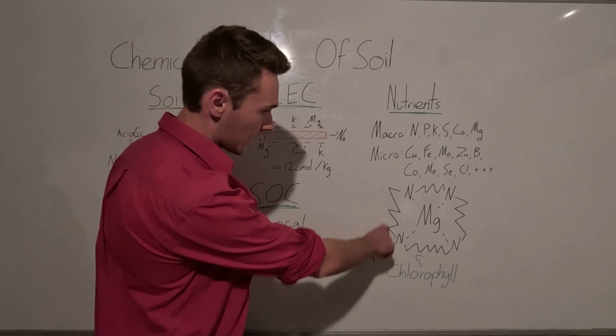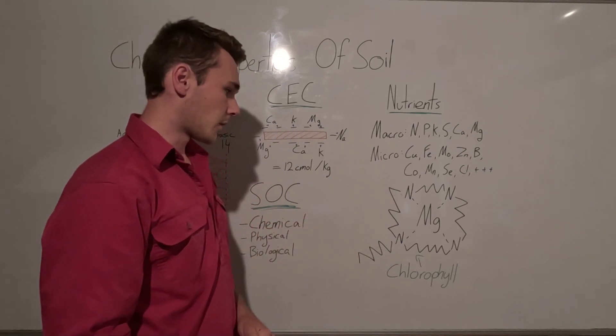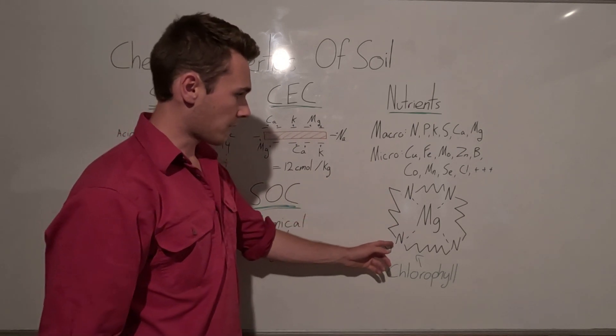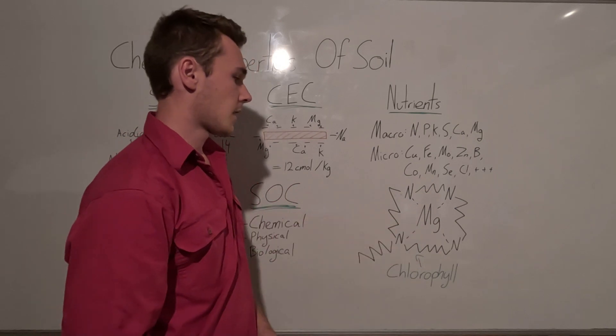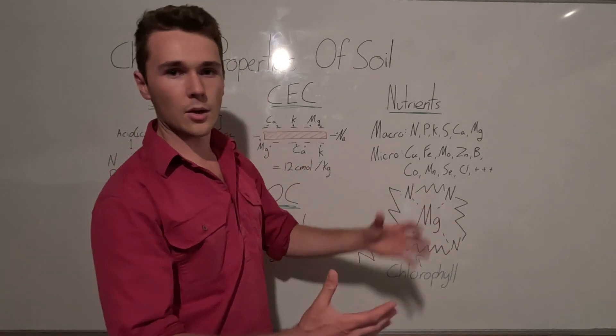You can see these squiggly lines here, they're just a carbon backbone for this molecule. You'll notice that we have four nitrogen and magnesium, and so if we were to try and build this but we didn't have magnesium, the compound just wouldn't work.